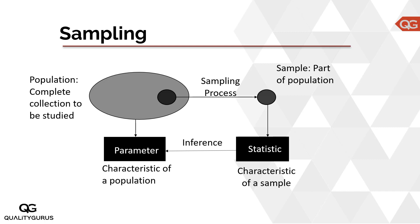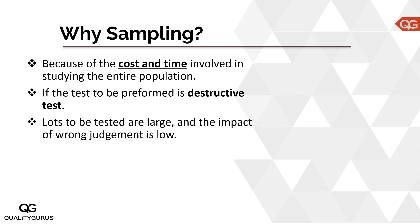Based on the statistic, which is the characteristic of the sample, you judge or infer what the characteristic of the population would be. So based on the average weight of the sample, you infer or guess about the average weight of the whole lot or the whole population. This is the relationship between sample and population.